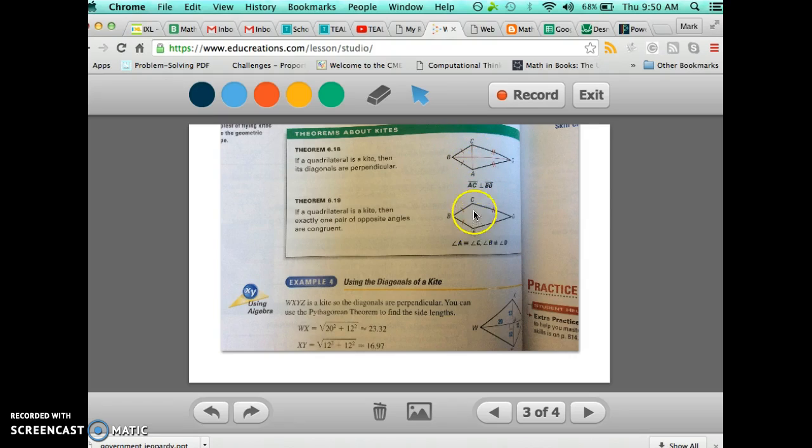Second thing is that it has one pair of opposite angles that are congruent. Not two pairs. One pair. C and A are congruent. B and D are not congruent.